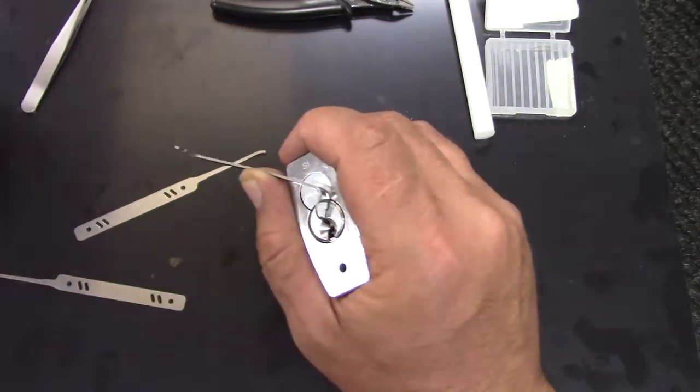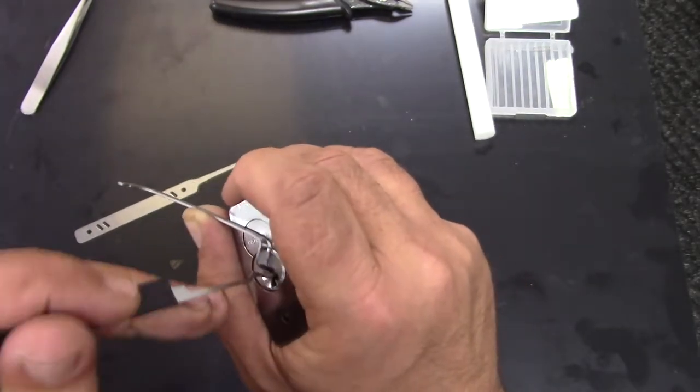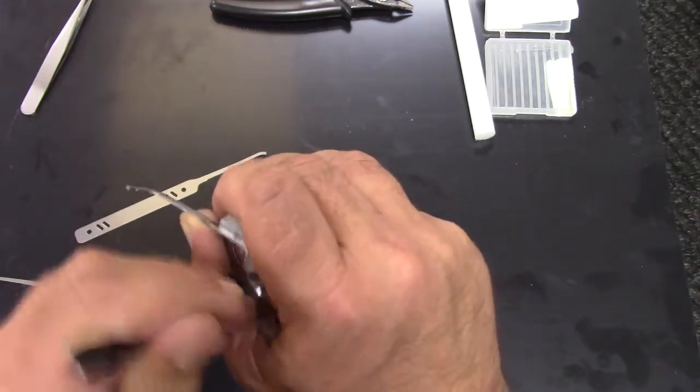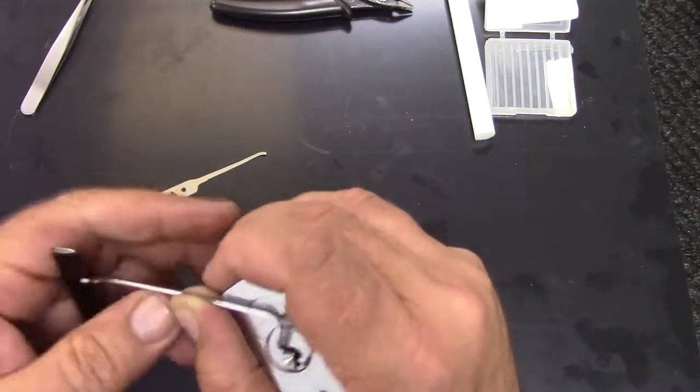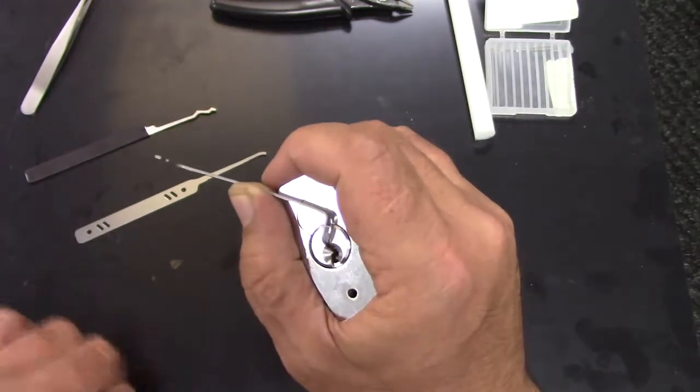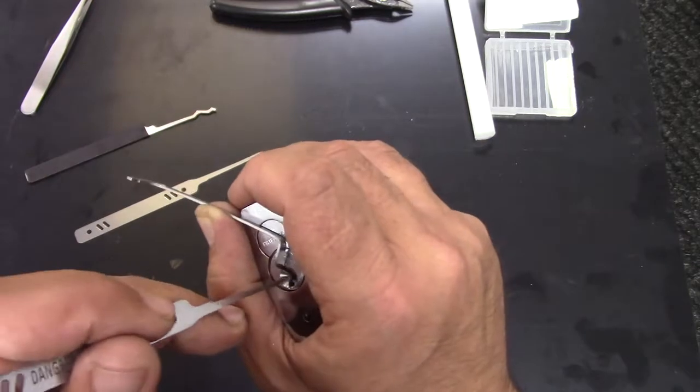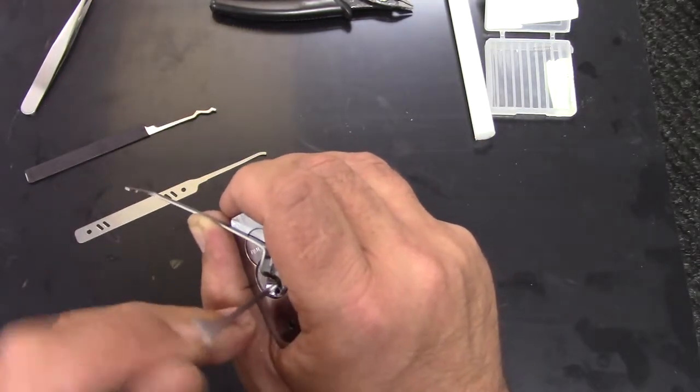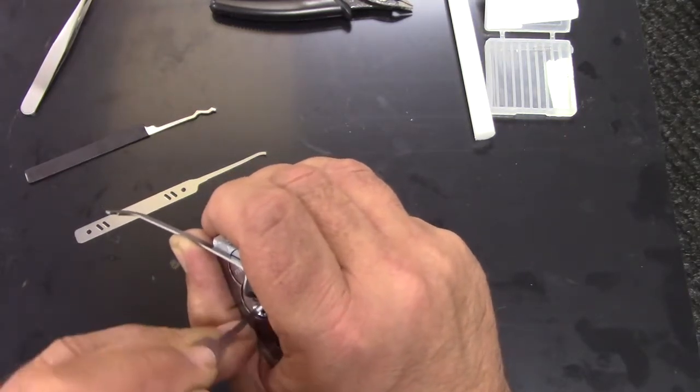Earlier today I managed to rake it a few times, and I've single point picked it a few times. Here I'm just going to try raking it to set some pins. And there, it's not going to come out. I can feel some rotation on it. Earlier I was just working with the rotation and the counter-rotation, using the rake as a pick at the time that it was meeting the counter-rotation, and it managed to open it quite quickly.